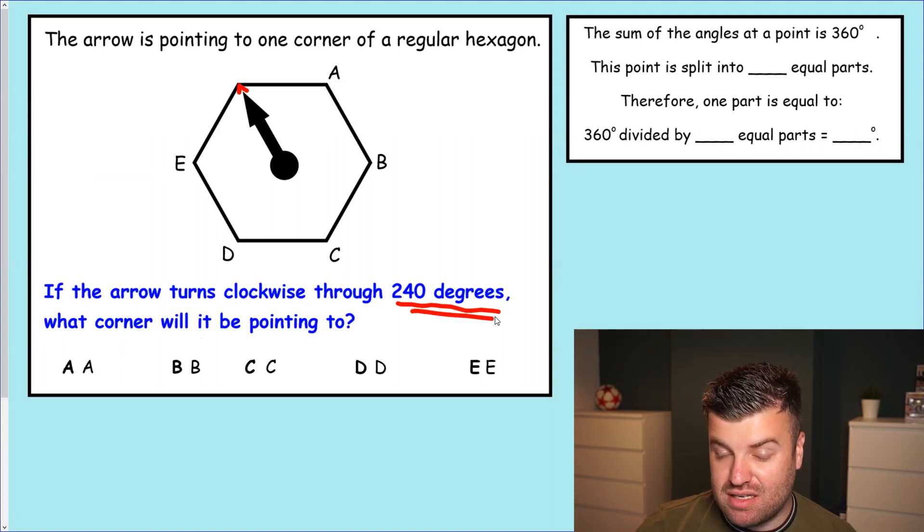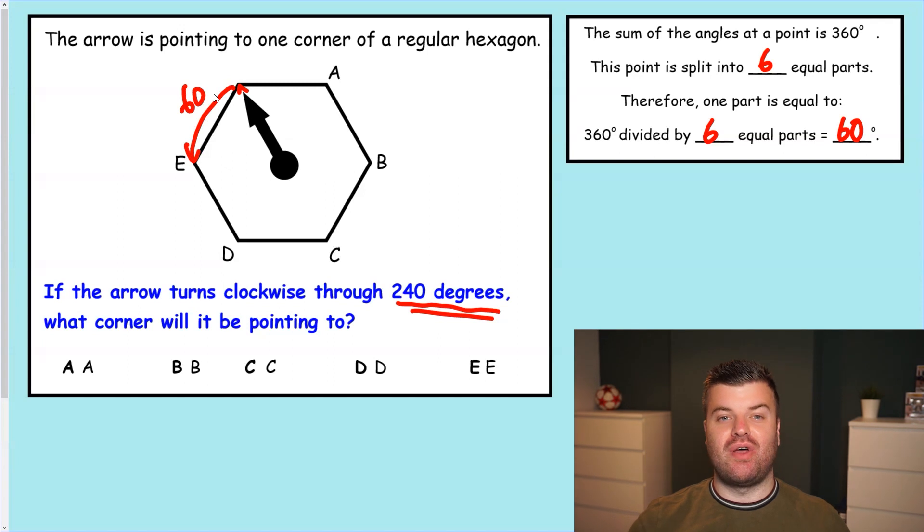Well, you're going to have a go at this one. I'm going to set you up here. The point is split into six equal parts. We know 360 divided by six is 60 degrees. So every single turn it makes to a new point is 60 degrees. Can you turn that arrow clockwise 240 degrees? And tell me in the comment section down below, what letter do you get to?